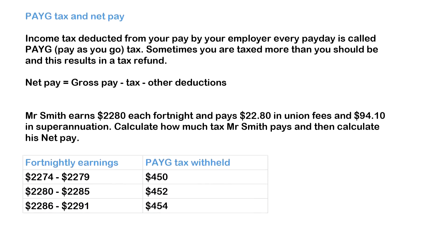Now we're going to look at PAYG tax and net pay. In Australia we do a lot of pay-as-you-go tax, which is good because it means you won't owe a big lump sum at the end of the year. Sometimes you may even get a tax refund where the government pays you back — like a little savings account. Net pay is gross pay minus your tax minus other deductions.